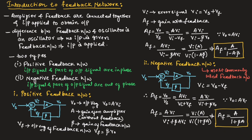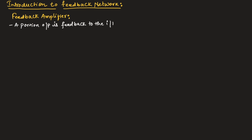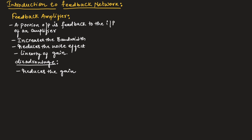Now let us understand what a feedback amplifier is. Similar to a feedback network, in a feedback amplifier a portion of the output is fed back to the input of the amplifier. The advantages of a feedback amplifier are that it increases the bandwidth, reduces the noise effect, and provides linearity of gain. The disadvantage is that it reduces the gain, is slightly complex in construction, and is costly.